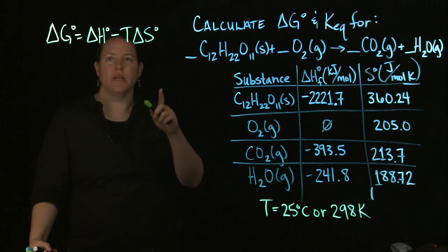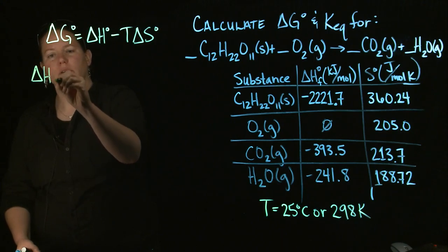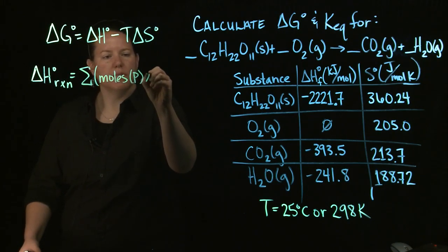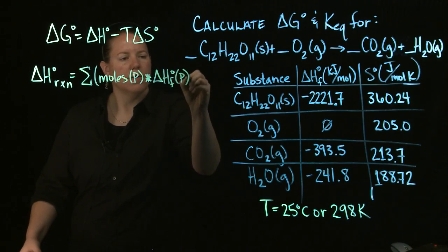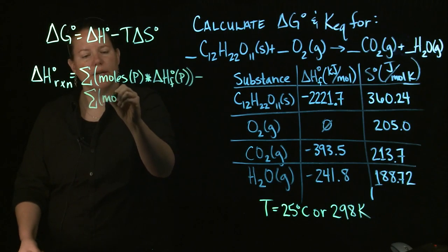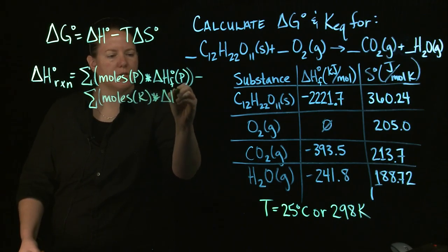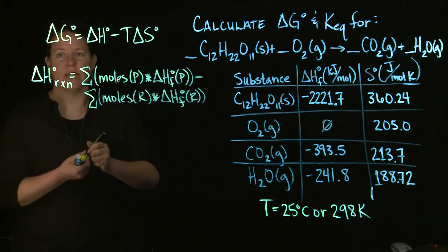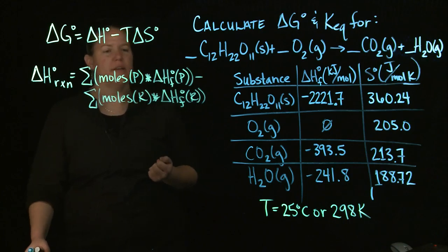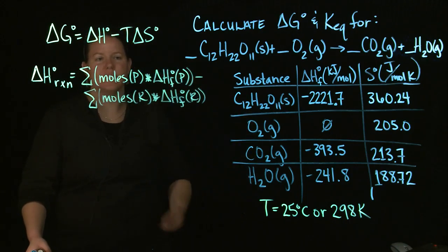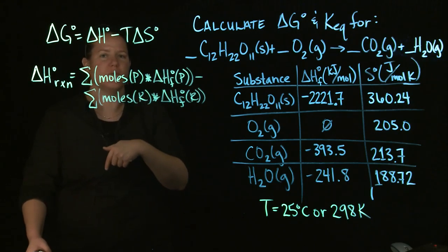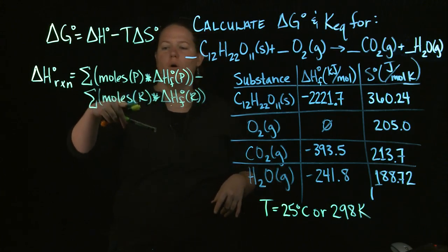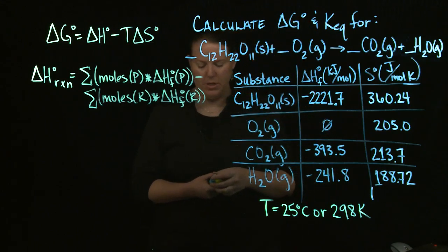The way we're going to figure this out is we need to find H and S first. The way we find the H of the reaction if we have formation moments is we know it's the sum of the moles of the products times the delta H's of formation of the products minus the sum of the moles of the reactants times the delta H's of formation of the reactants. In terms of plugging it into your calculator it's actually easier if you use the equation. The only problem here is that the moles are obtained from the balanced chemical equation, and right now my balanced chemical equation is not so balanced.